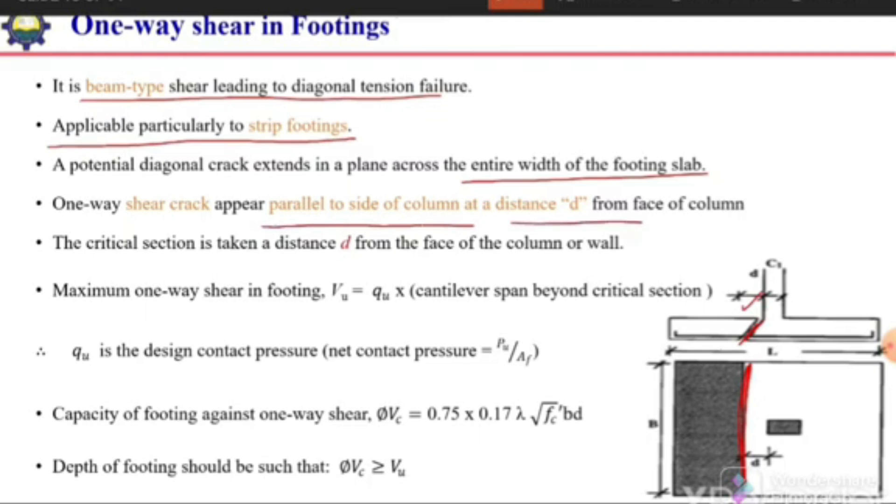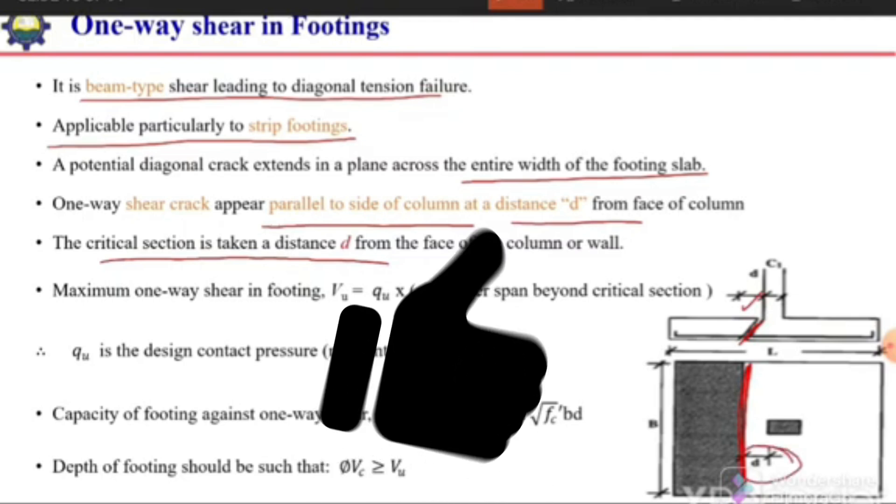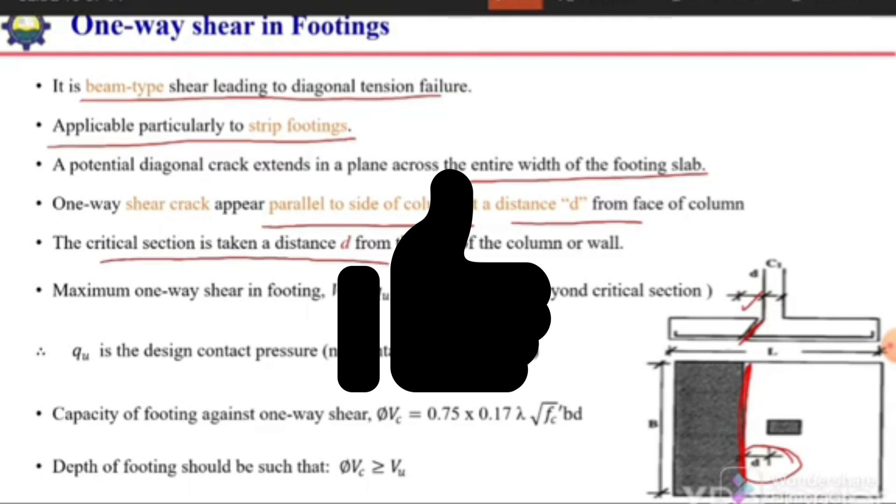One-way shear cracks appear parallel to the side of the column at a distance d from the face. The critical section is considered at a distance d from the face of the column in case of one-way shear.